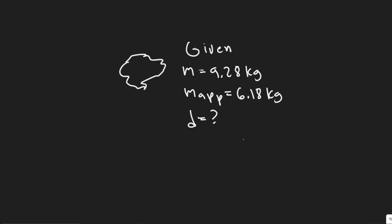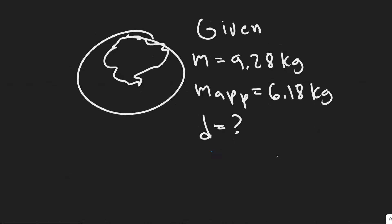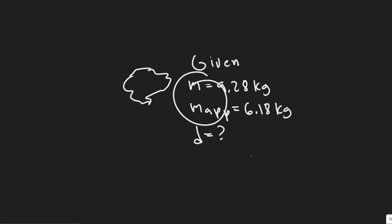In this problem we're told a geologist finds a moon rock whose mass is 9.28 kilograms and has an apparent mass of 6.18 kilograms when submerged in water. What is the density of the rock? We're given the real mass of the rock, which is 9.28 kilograms, and we're given the apparent mass of the rock when we submerge it in water.